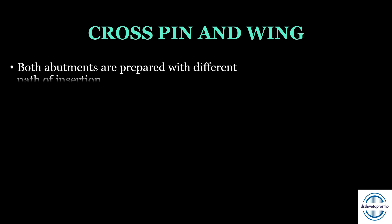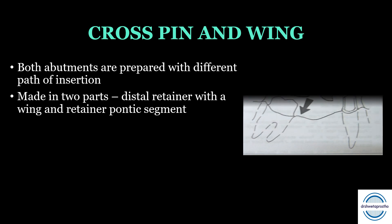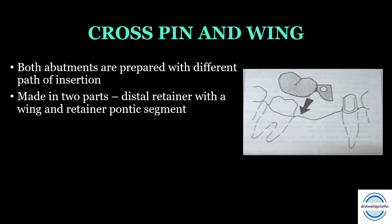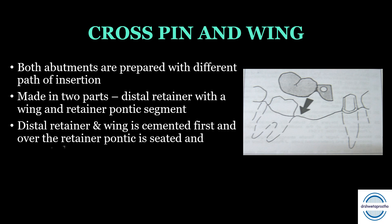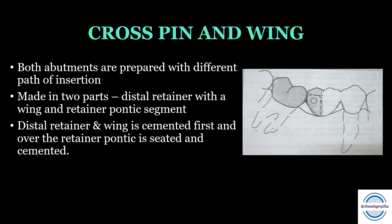Cross pin and wing FPD — in this option, both abutments are prepared with different paths of insertion. The FPD is made in two parts: first, the distal retainer with a wing as seen in the picture; second, the retainer-pontic segment in the mesial part. The distal retainer and wing are cemented first, then the retainer-pontic is seated and cemented, and the pin is seated into the pin hole. The main drawback, as seen in the pictures, is that the technique is very technique-sensitive and difficult to achieve technically.